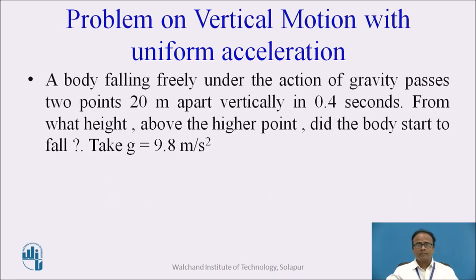Now let us consider the problem on vertical motion with uniform acceleration. A body falling freely under the action of gravity passes two points which are 20 metres apart vertically in 0.4 seconds. From what height above the higher point did the body start to fall? Take g = 9.8 m/s².